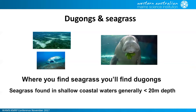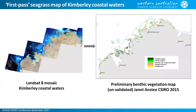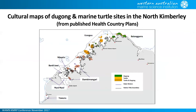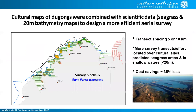To create the survey design, Pete combined several information sources. Janet Anstey from CSIRO helped develop a predictive seagrass map using Landsat imagery. Pete gathered Indigenous knowledge using cultural maps from healthy country plans and conducted interviews, discussions, and workshops with traditional owner groups — Emma Woodward assisted with that. All of this — cultural maps, seagrass scientific data, and standard aerial survey techniques — was combined to set up a stratified design for aerial surveys across the Kimberley.